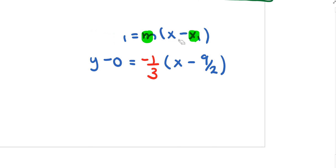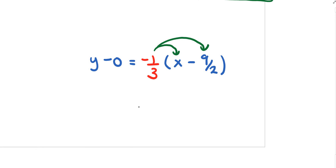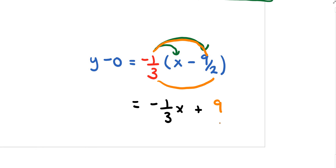Now distribute into the brackets. This gives negative 1 over 3x, and then 1 times 9 is 9 and 3 times 2 is 6, so plus 9 over 6. With y on the left, this is slope-intercept form. We take one extra step to write it in standard form.